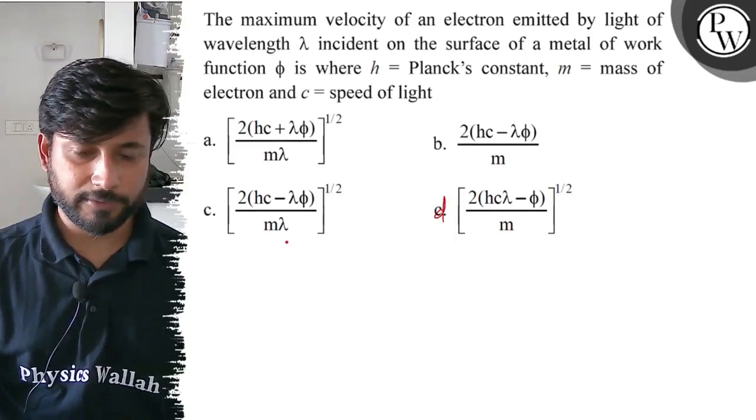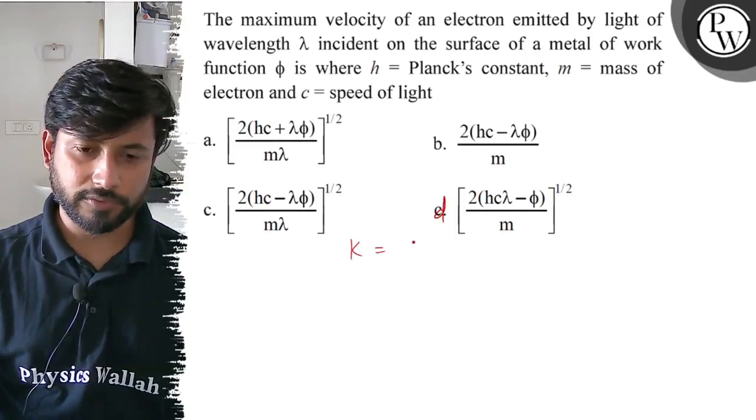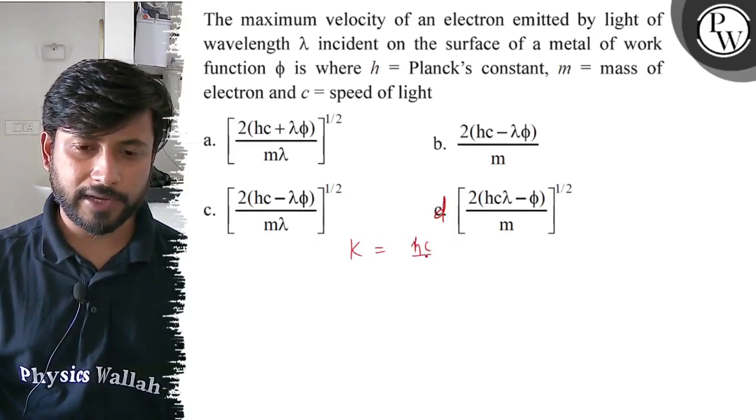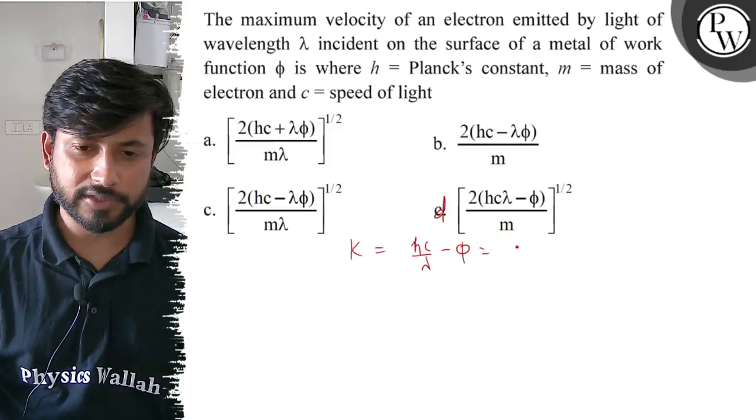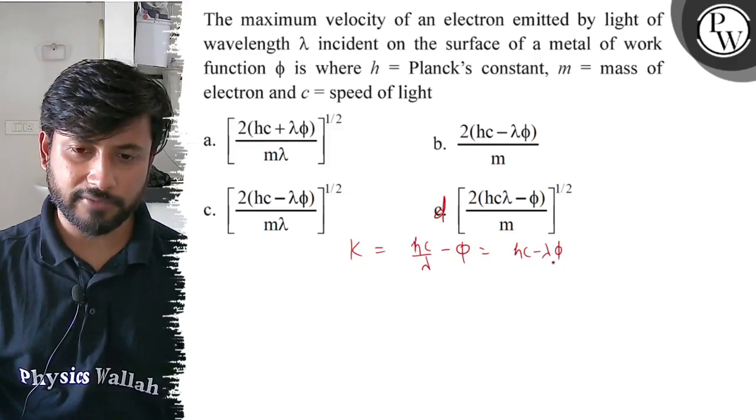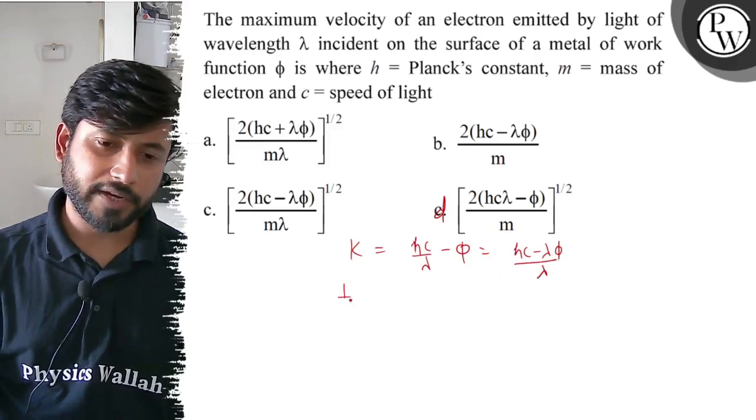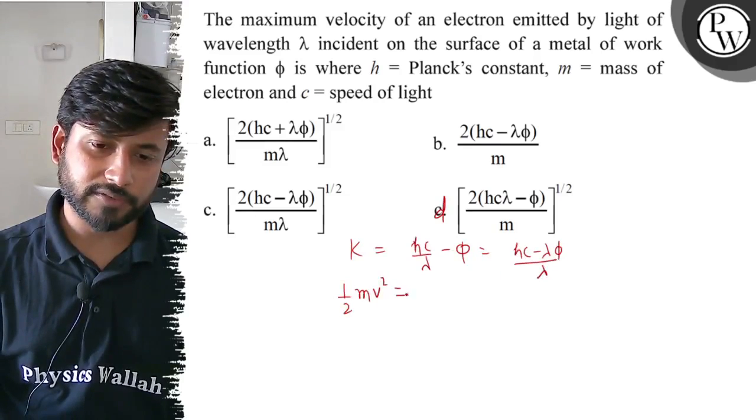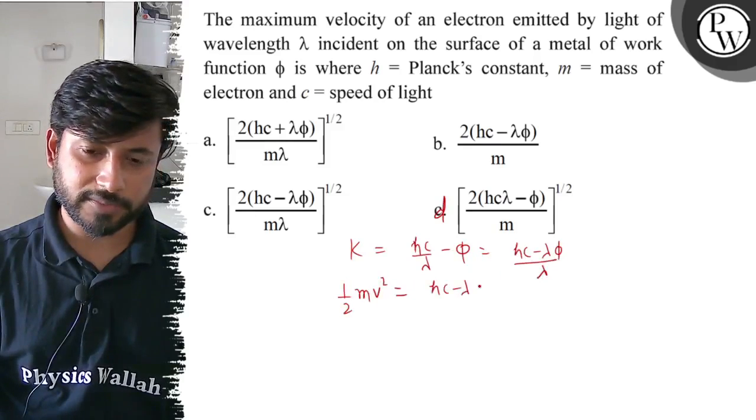So the kinetic energy value will be hc/λ minus φ. We can write this as (hc - λφ)/λ. For kinetic energy, we can write: ½mv² = (hc - λφ)/λ.